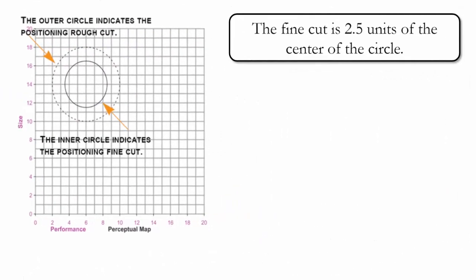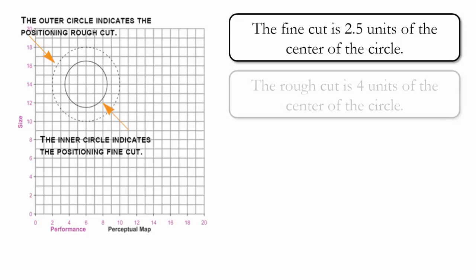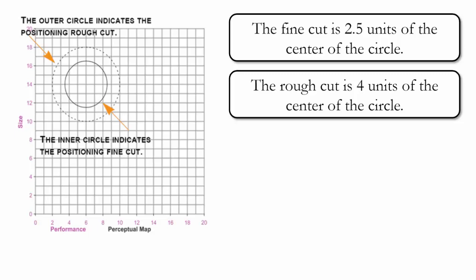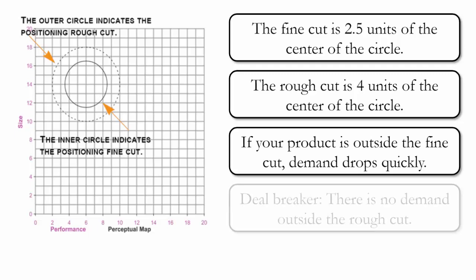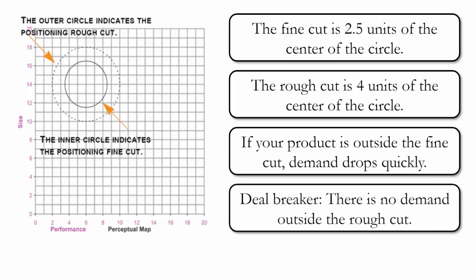Let's take a closer look at the perceptual map. You can see two circles for each market segment. The inner line is called the fine cut, and it is always two and a half units from the segment center. The outer line is called the rough cut, and it is always four units from the segment center. If your product is positioned outside the fine cut, demand drops quickly. If your product is outside the rough cut, customers see this as a deal breaker and will not purchase your product. In general, you want your products positioned within the fine cut and as close to the ideal spot as possible.